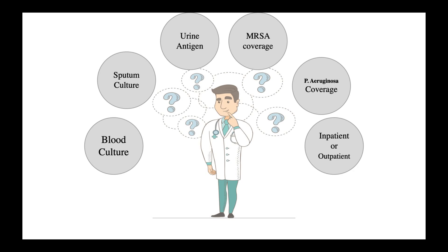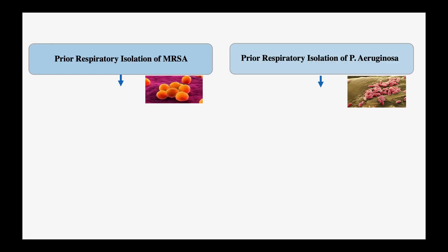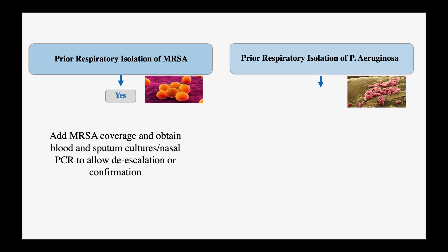The first question we need to answer is whether our patient has a prior respiratory isolation of MRSA or pseudomonas. If the answer is yes — if the patient has a prior history of MRSA infection — then we need to obtain blood culture, sputum culture, and nasal PCR, and empirically cover for MRSA using vancomycin or linezolid. Then we can de-escalate or continue the same antibiotics as confirmed by blood culture.